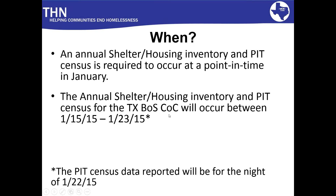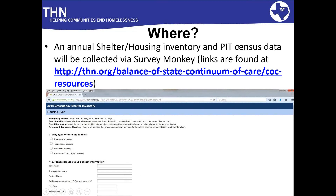The point-in-time census number you will be entering for your program — each program will have an individual entry — will need to be the data from January 22nd. The number of people who stayed the night on January 22nd should be reported as the census for that program. Where do you enter this data? We have an online survey through SurveyMonkey, and it will be on our Balance of State Continuum of Care page of the THN website.